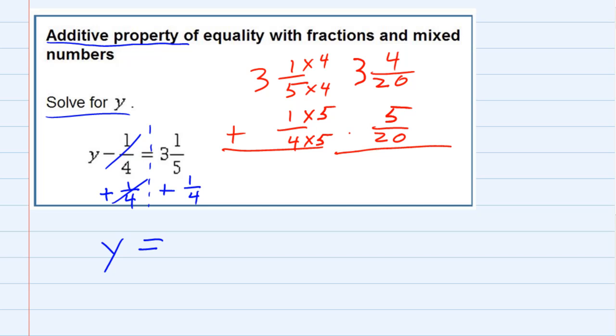So now that I have a common denominator I can add and for the fractions since they have the same denominator I'll keep that denominator 20. The 4 plus the 5 gives me 9 and then the whole part since there isn't anything out here I'm just going to bring down the 3 so 3 and 9 twentieths. So y equals 3 and 9 twentieths.